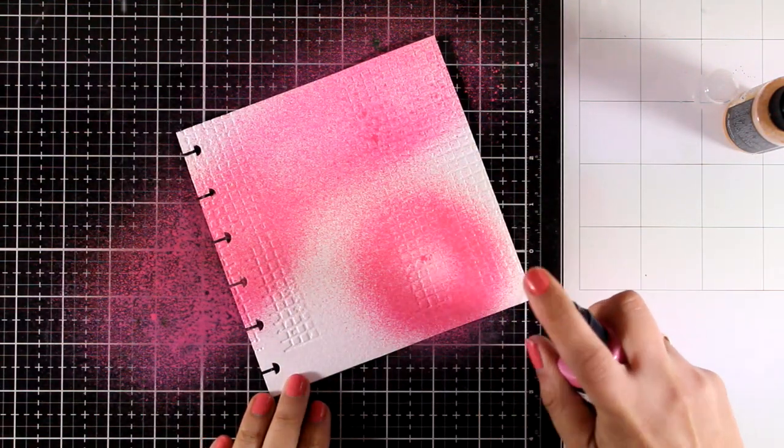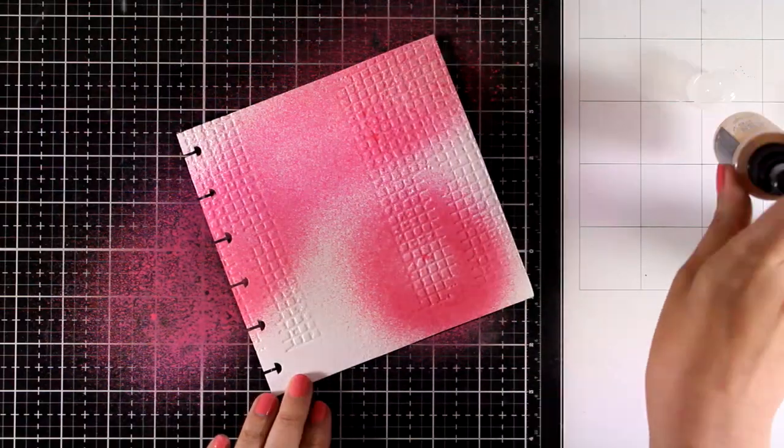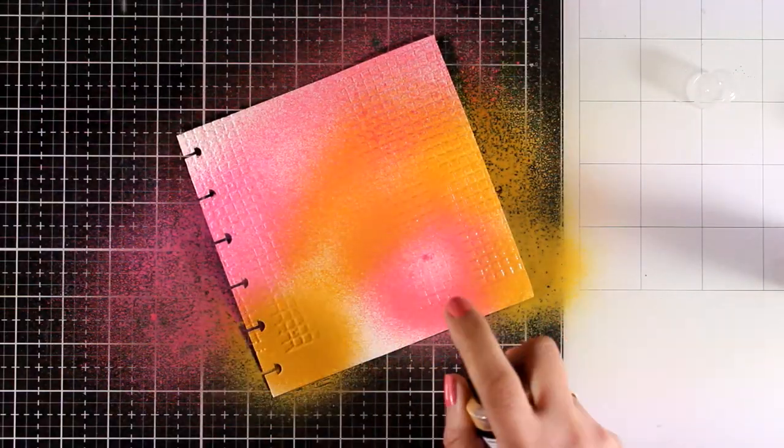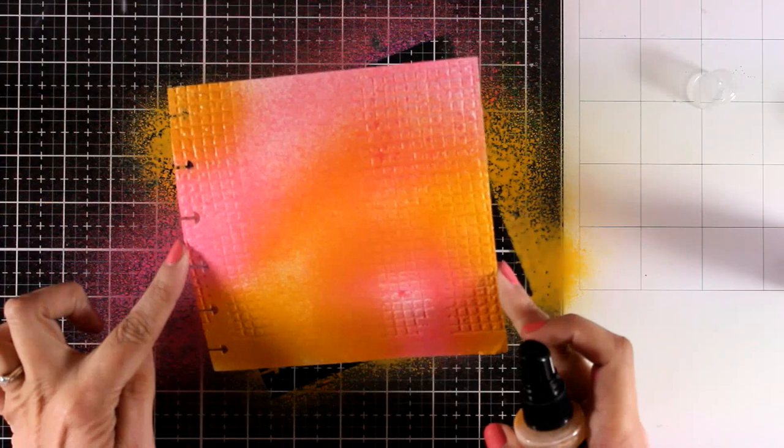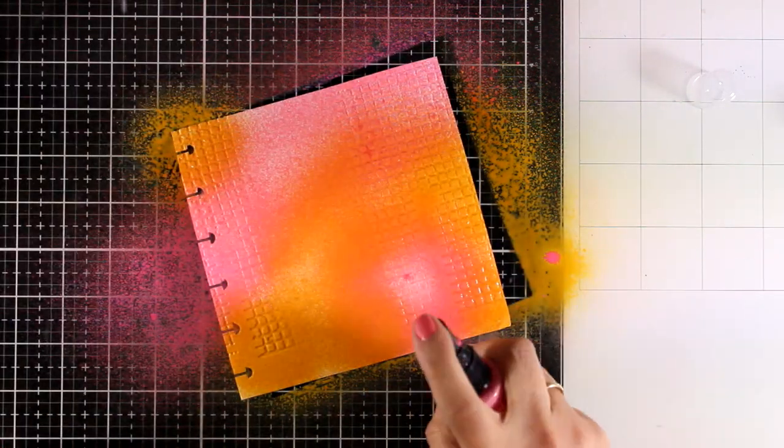If you move your hand as you apply the spray, you will get a nice distribution. If you keep your hand sturdy, you will get this circle. It doesn't really matter, but just a note if you want to avoid the circles.